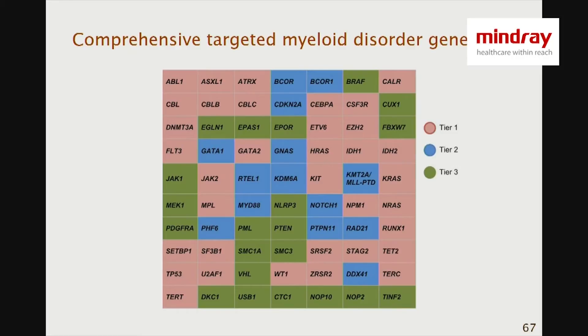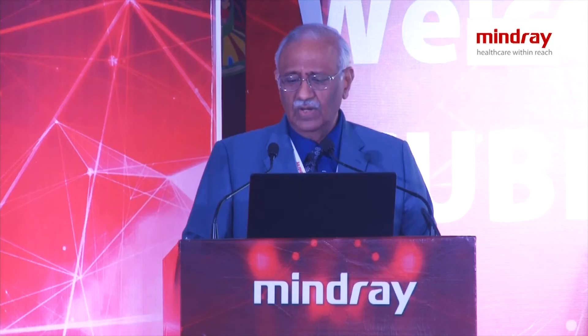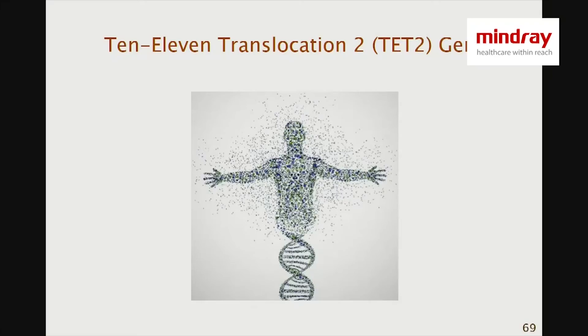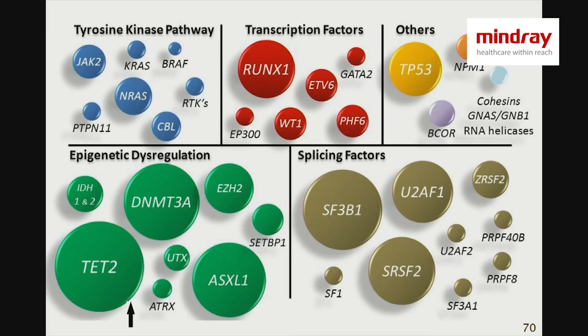This is a comprehensive targeted myeloid disorder gene panel in which you see three colors. The pink color is Tier 1, which should be your primary goal; failing which you go to Tier 2 (blue), and failing that, Tier 3 (green). In the pink color, one particular mutation — the TET2 gene mutation — was positive in our patient. TET2 stands for Ten-eleven translocation 2 gene. Yes, this is important to the management of our patient from Belgaon.